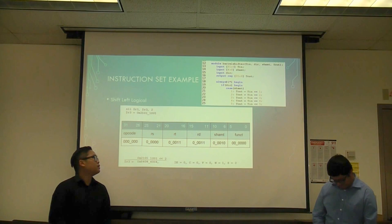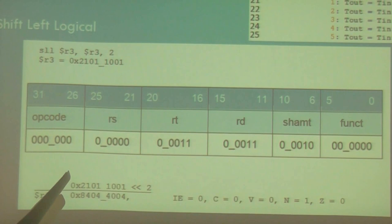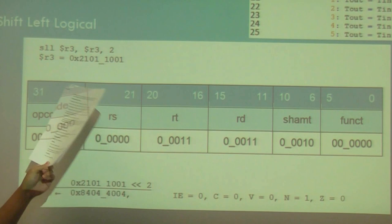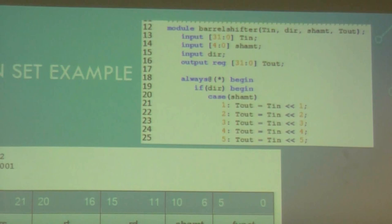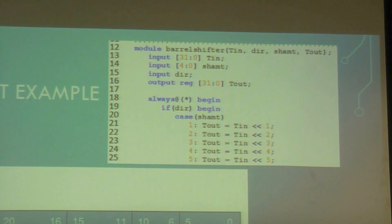Now we have an instruction set example using the shift-left logical instruction. Here we have SLL register 3, register 3, and 2. With the offset being 2 and register 3 having this value, that value will be shifted to the left twice. We were able to do that because of our shift amount, and from there we store it back to R3 with a new value. It's essentially a case statement, and for barrel shifting, T gets shifted by the shift amount value. T is the contents before being shifted, while shift amount is the number of bits for the shift operation — left, right, or arithmetic.